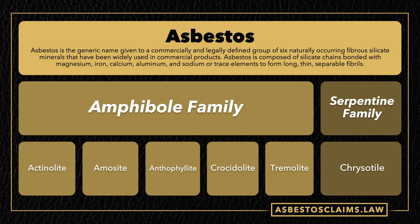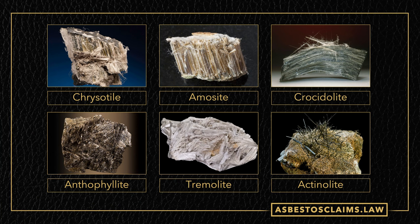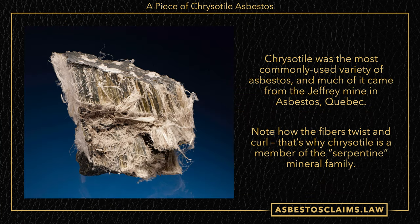And then we have the serpentine family, which includes chrysidolite. Now chrysidolite was and is the most widely used type of asbestos in the world. Typically when people are talking about asbestos, they probably mean chrysidolite. You can see on this picture how the fibers kind of curl and twist — that's why this is part of the serpentine mineral family.